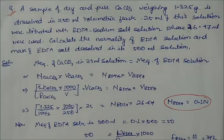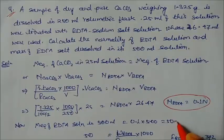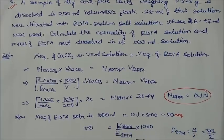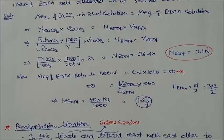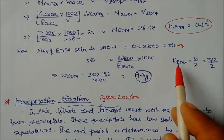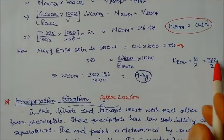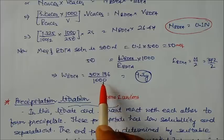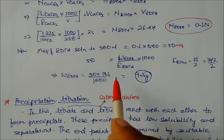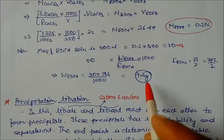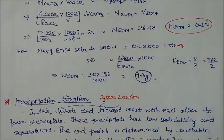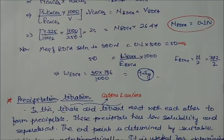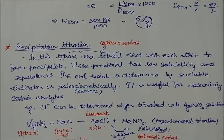For 500 ml we have 50 milliequivalents. This equals weight of EDTA divided by equivalent weight of EDTA times 1000. For the disodium salt, equivalent weight is M/2, which gives 186/2 = 93. Solving, the weight of EDTA is 10.3 grams. Now let us move to precipitation titrations.